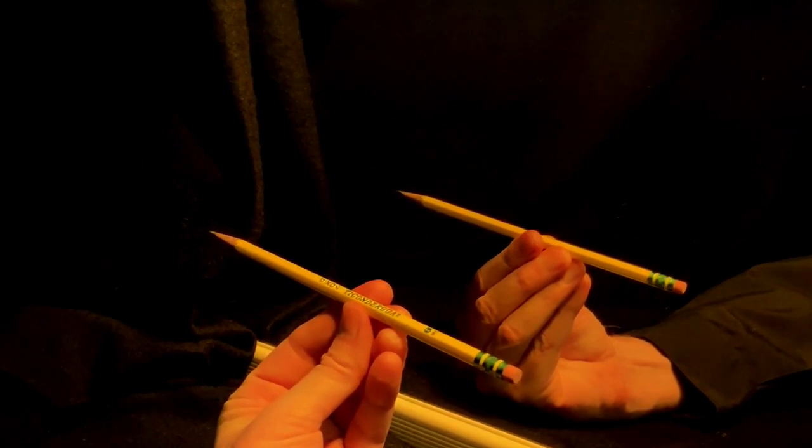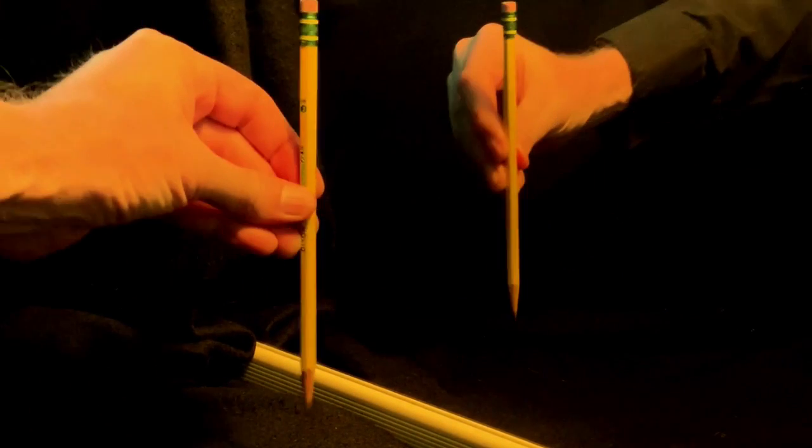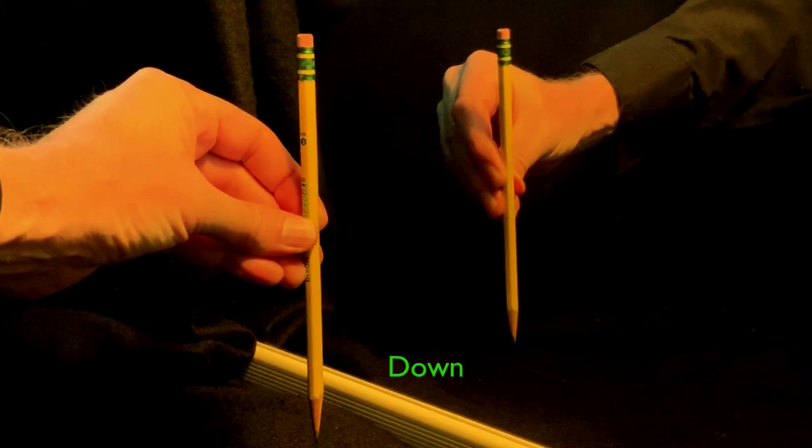Hold a pencil vertical in front of a mirror. Let's point the pencil downward, with the eraser in the up position. For both the actual pencil and its mirror image, the tip is down and the eraser is up. So the mirror does nothing to the up-down axis either.